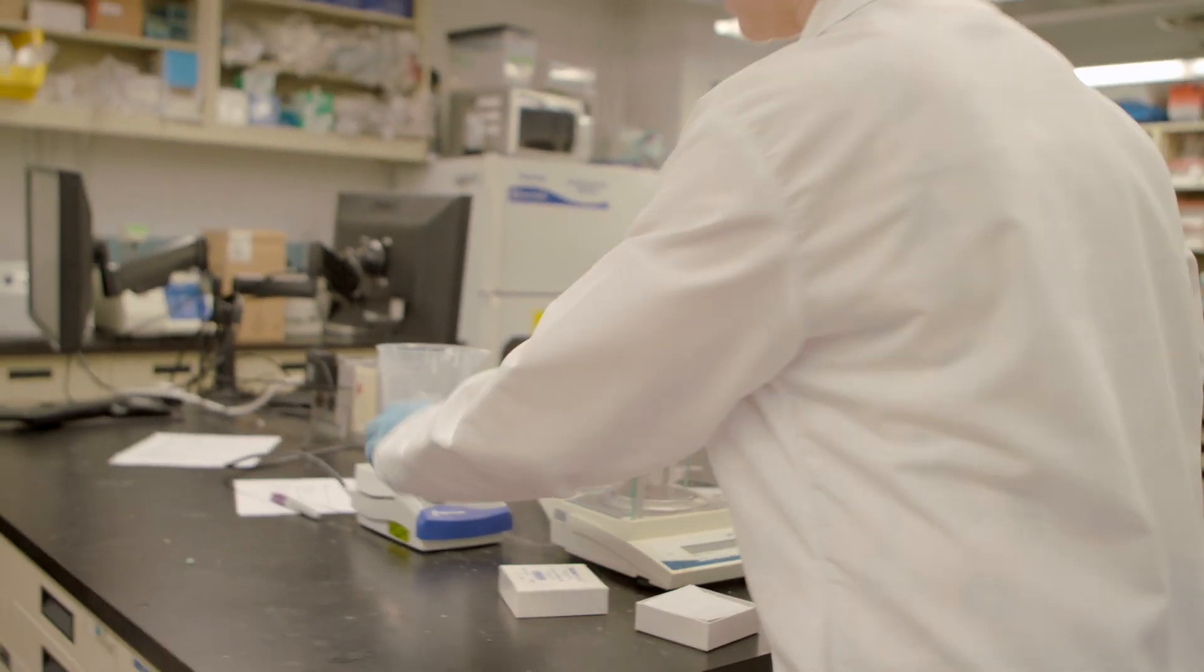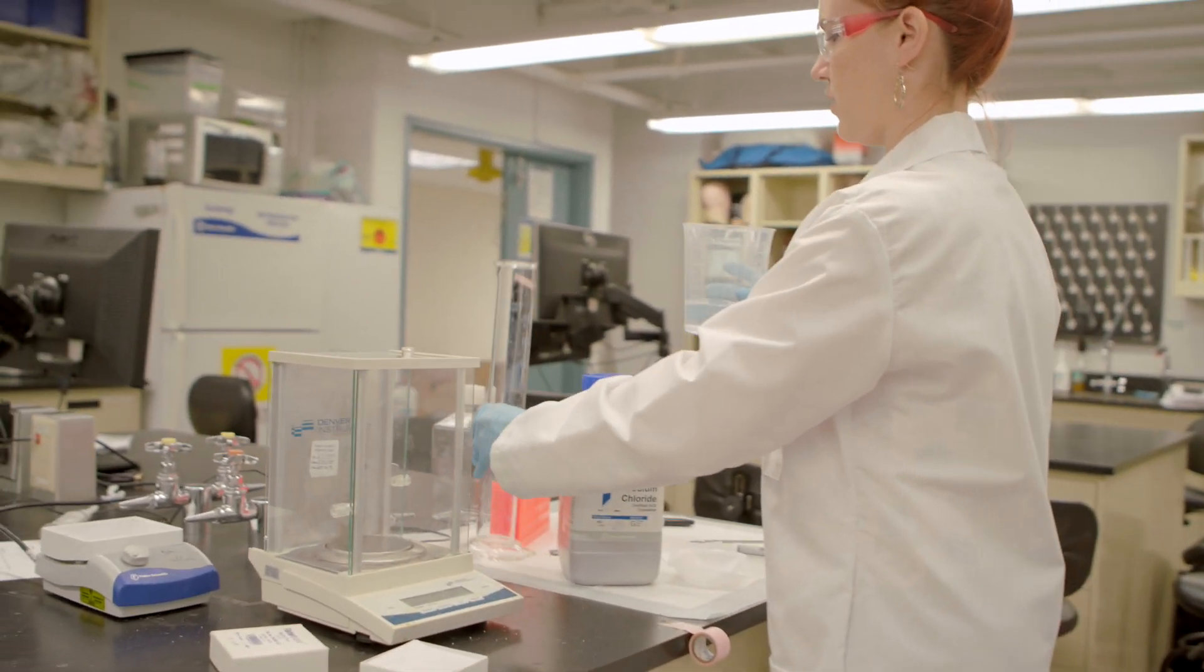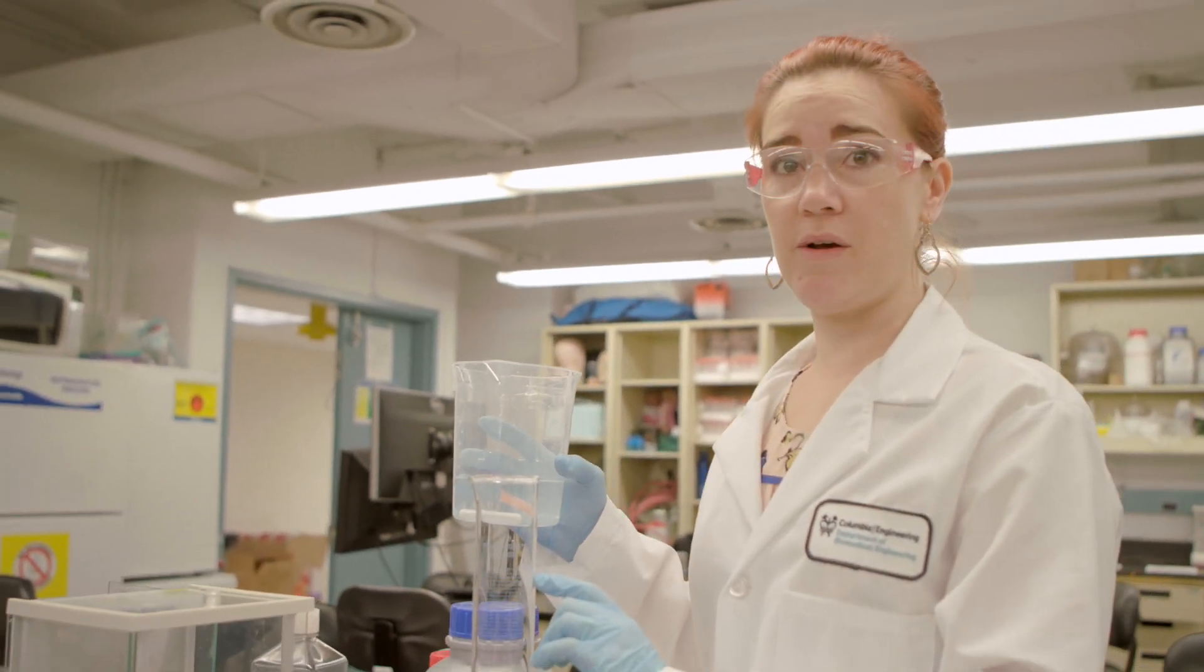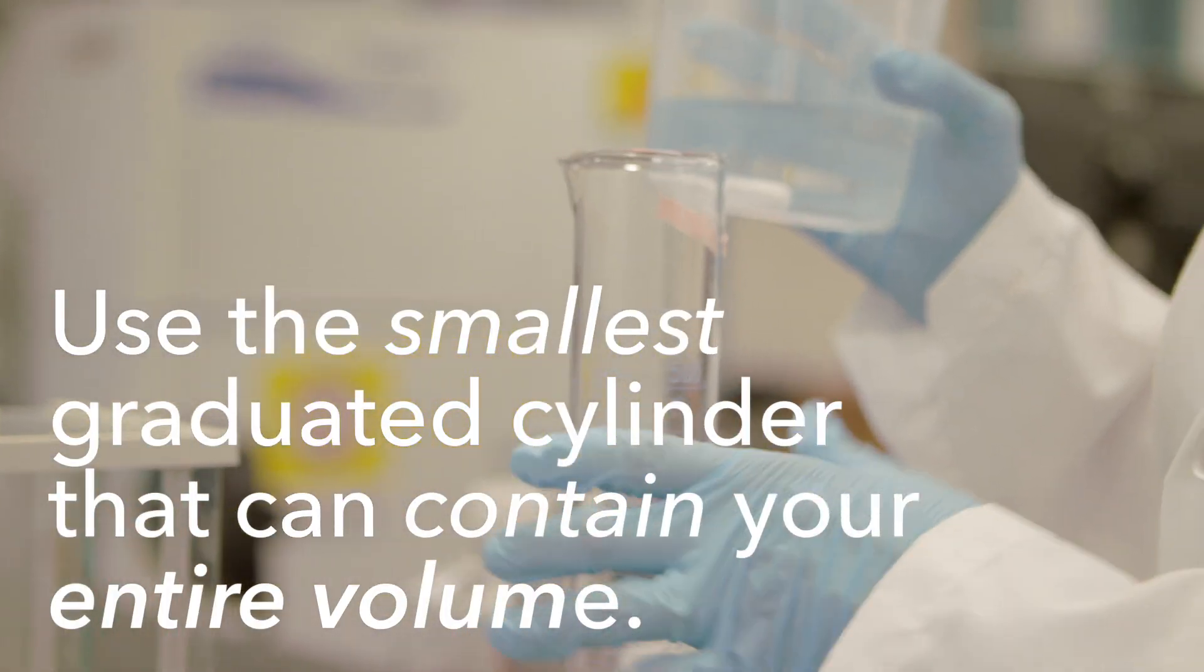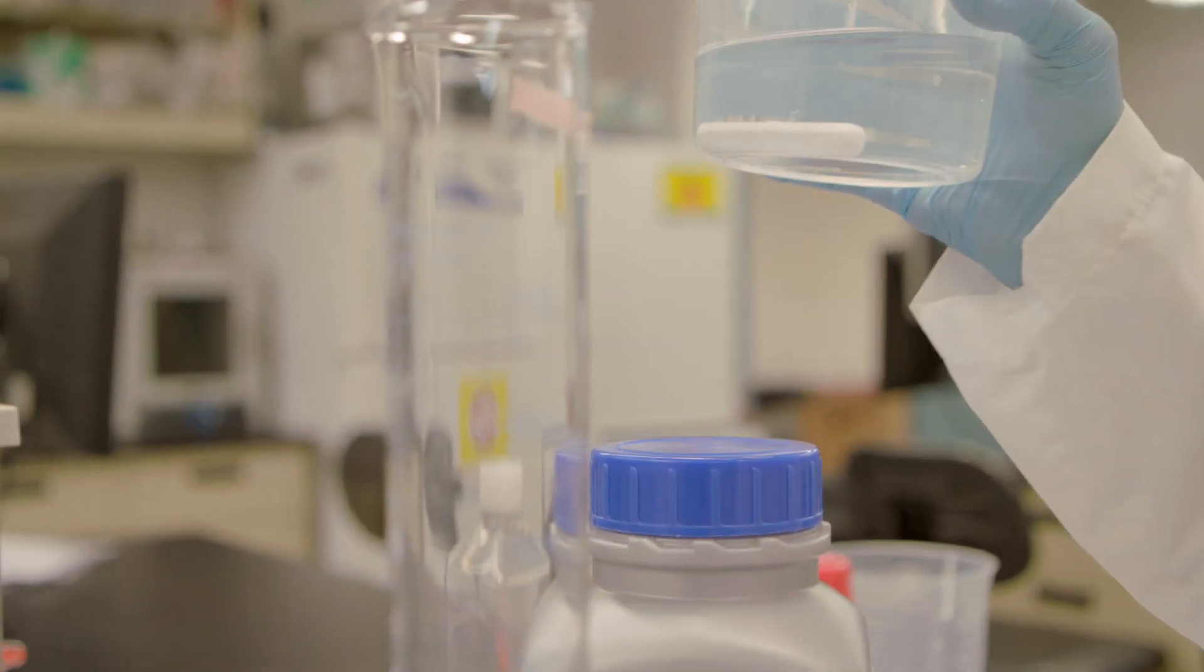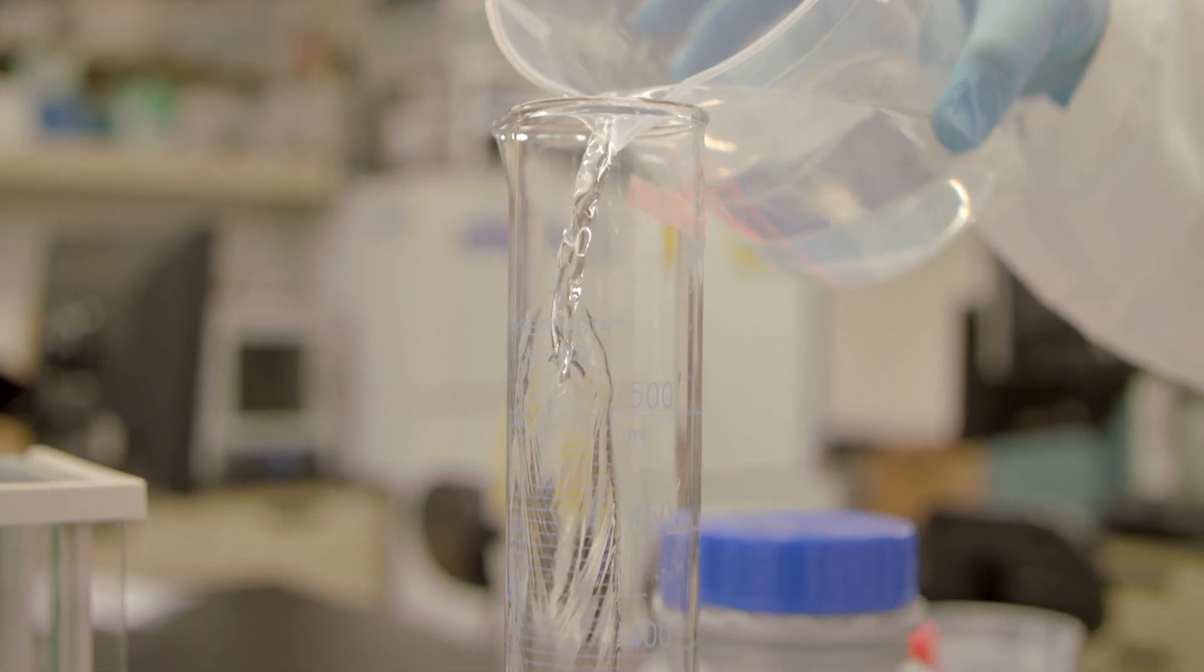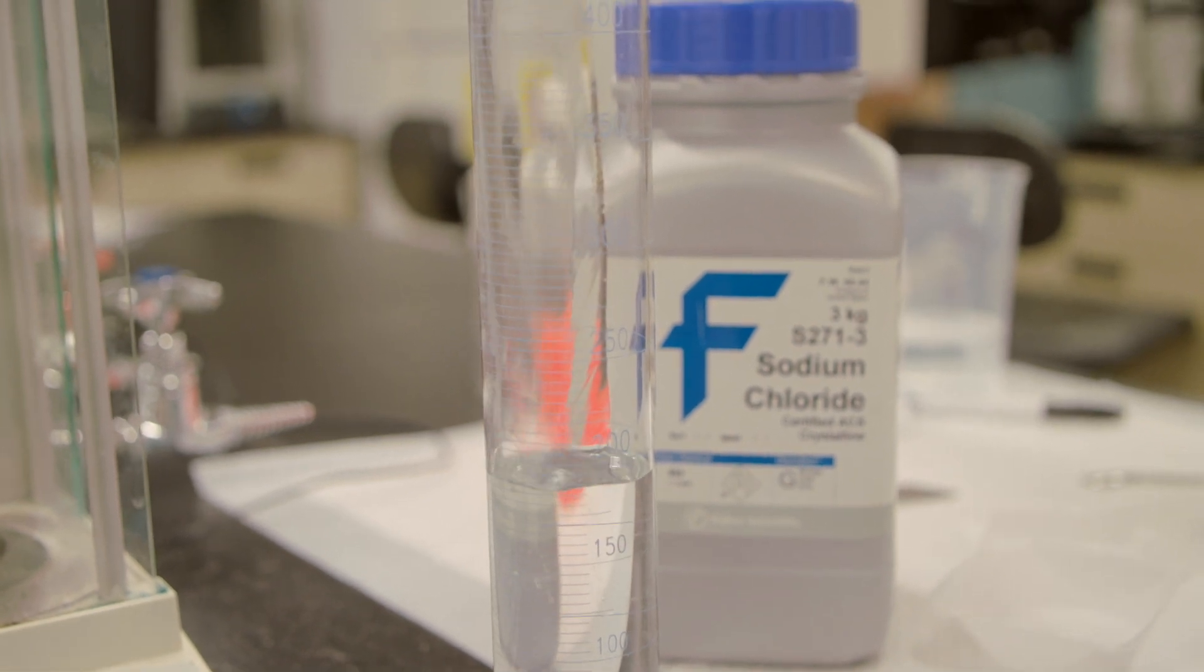So our liquid looks nice and clear. I'm going to turn this off and pour my liquid into a graduated cylinder. I know I want 500 mils in the end. You want to pick a graduated cylinder that's the smallest cylinder you can use, but still hold all of your volume. So I wouldn't want to use a 1,000 mils cylinder to measure out 100 mils of liquid. In this case, I have this nice 500 mils cylinder, and that's exactly what I want.